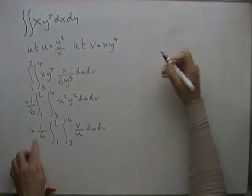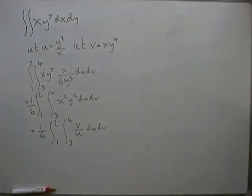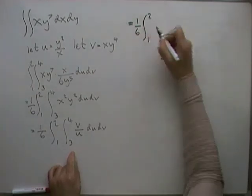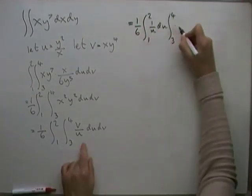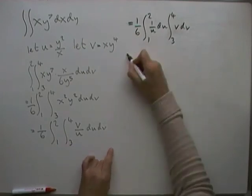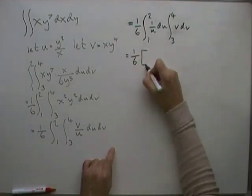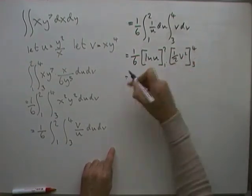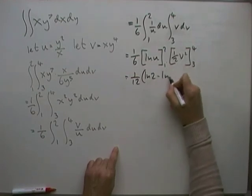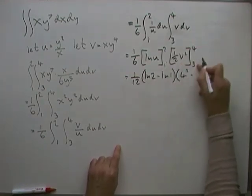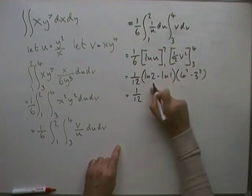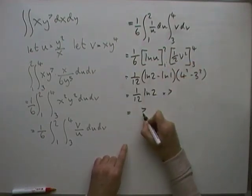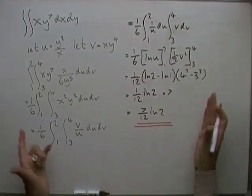Clear this wee space away here. We can get started now. So I've got 1 sixth of 1 to 2 for u and 3 to 4 for v, dv. And they're both very easy. Now, the first one's just log. Log n u from 1 to 2, and that's just a half v squared from 3 to 4. So 1 sixth of, and that'll be log n 2 minus log n 1. And that's just going to be 4 to the 3, I mean 4 squared to 3 squared. So that's just going to be log n 2. That's going to be 16 minus 9, so that's going to be 7. So 7 twelfths, log n 2, and that's it, done.